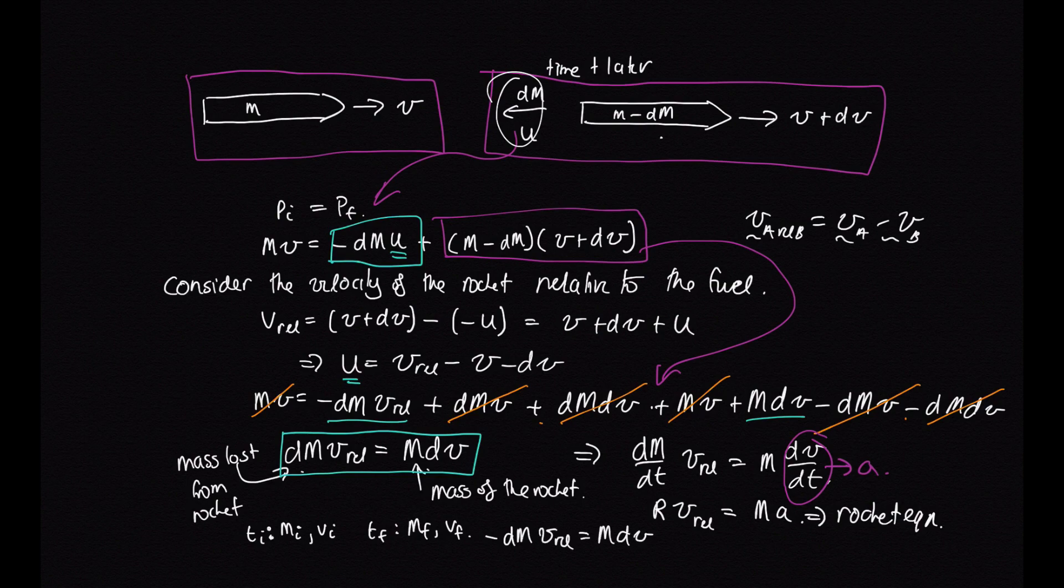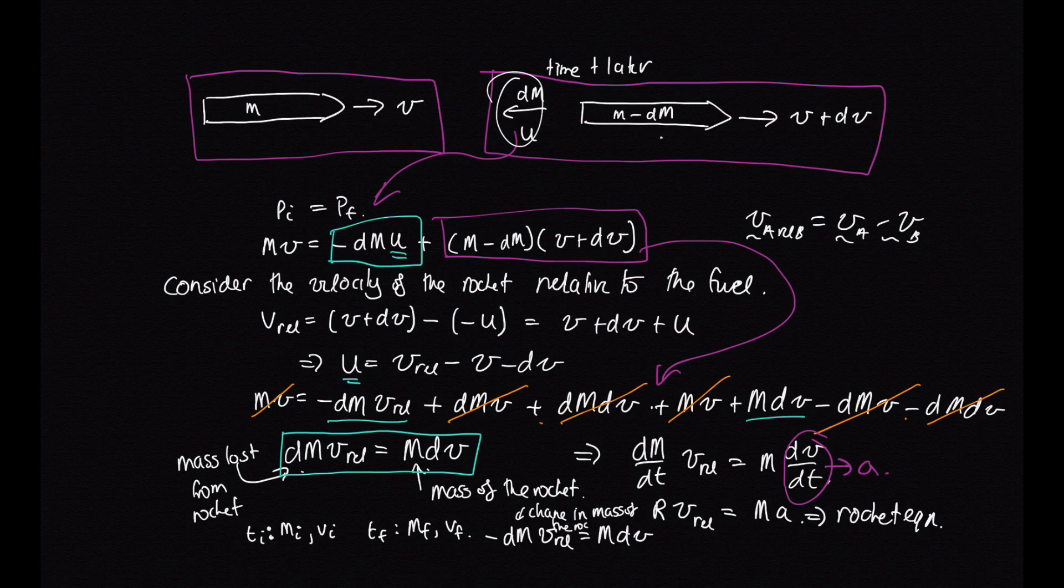And in this case, this dm, this is the change in mass of the rocket itself. Okay, so what we want to do is just integrate this and we've got here our limits for our integral. So let's rearrange and then integrate.